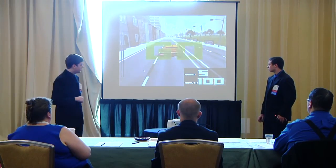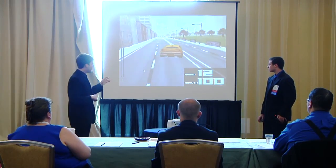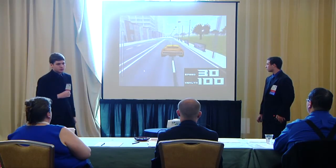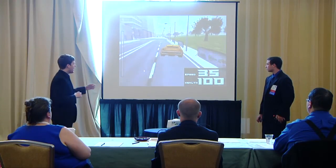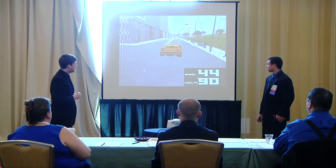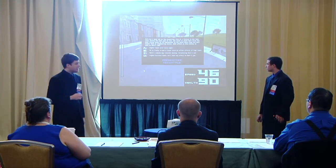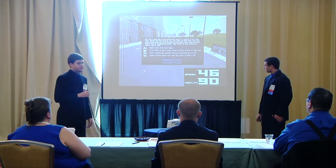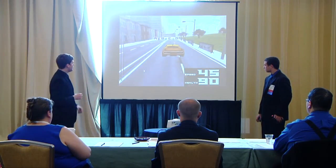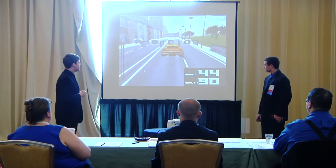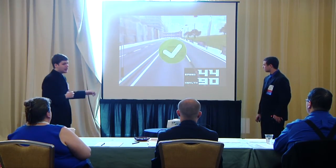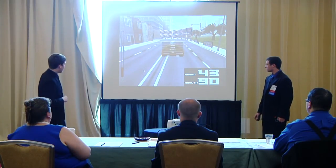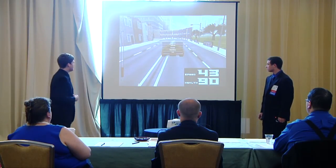On the bottom right-hand side of the screen, we have a speed and a health indicator. If you happen to go over 20 miles an hour and run into the wall on the side of the road, it will take damage — five points per hit. We have our question here. He's going to answer it, and he got it right, so it's going to display a checkmark and have his gas increased.